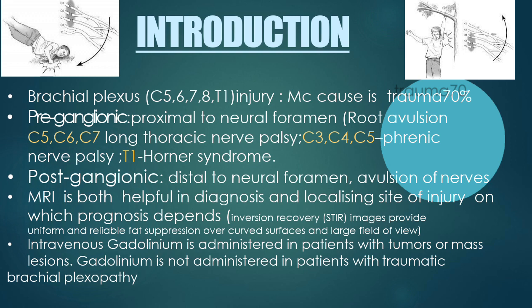In contrast, postganglionic lesions are lesions distal to the neural foramen or distal to the dorsal root ganglion — these are avulsions of the terminal nerves. This distinction is of critical importance because preganglionic lesions are located in the central nervous system, where neuronal regeneration is absent, making the prognosis very grave. Postganglionic lesions are in the peripheral nervous system where regeneration is far better, so their prognosis is significantly more favorable.